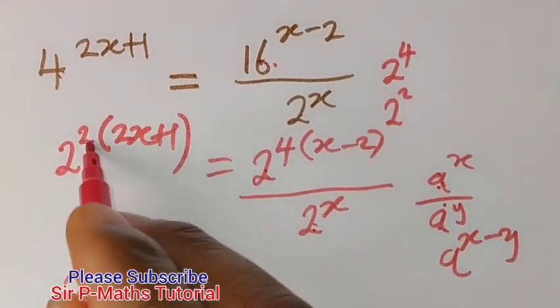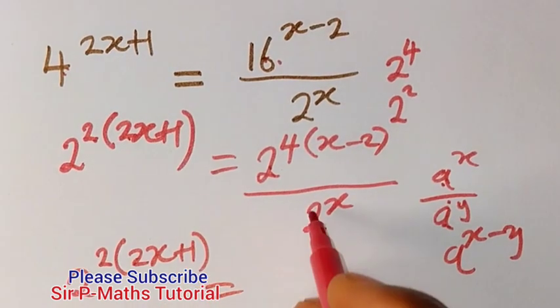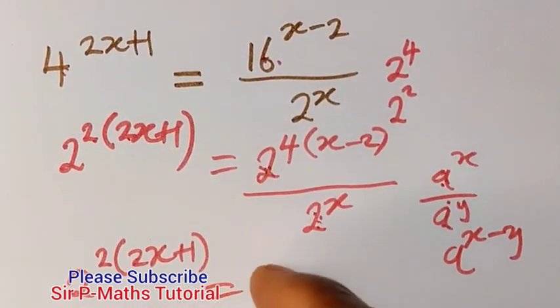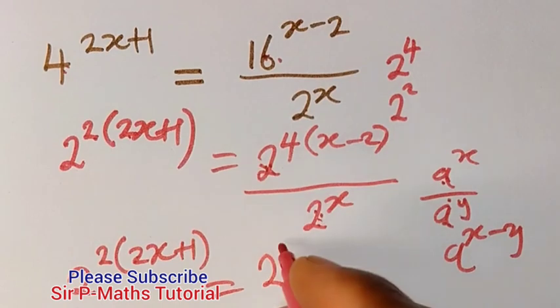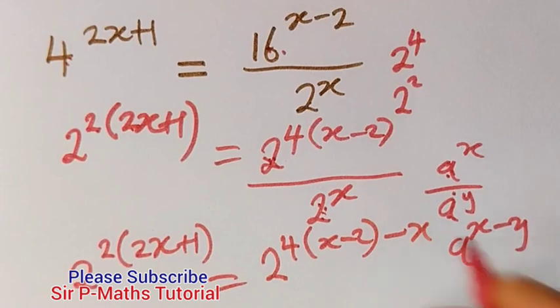Let's do that here. I will have 2, x plus 2 into 2x plus 1 equal to, the bases are same so we will take 1 and subtract powers 4 into x minus 2 minus, the power here is x.